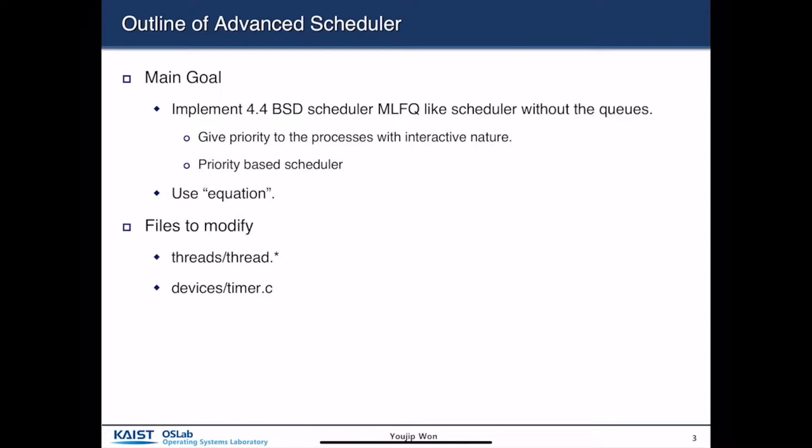without the queues. The BSD 4.4 scheduler gives priority to processes with an interactive nature, and it is basically a priority-based scheduler. It uses an equation to compute the priority.